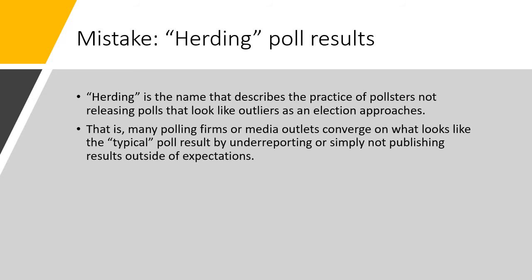Another mistake — one that even pollsters sometimes make — is called herding. Herding is the practice of pollsters not releasing polls that look like outliers as an election approaches. The confidence interval is about 95%, so that means about one out of 20 polls can be expected to be just outside the margin of error — your sample's just goofy. So when you see a result that looks way different than everybody else's polls, or your previous polls, you might say 'maybe we got a weird sample' and just not publish that one.